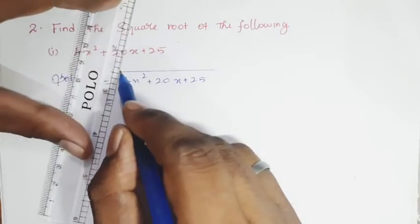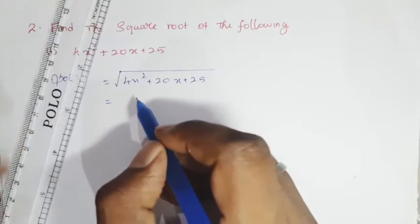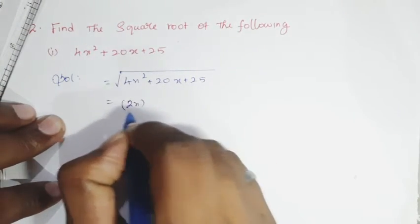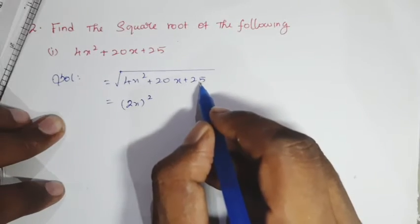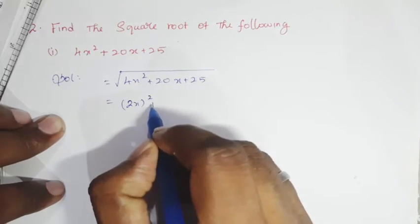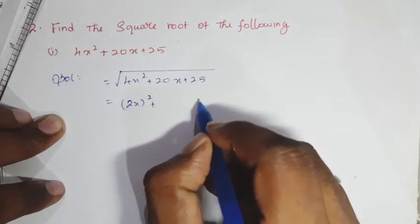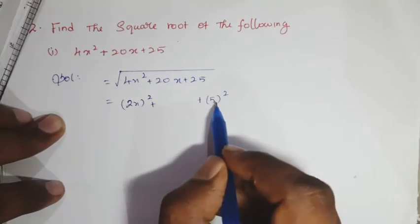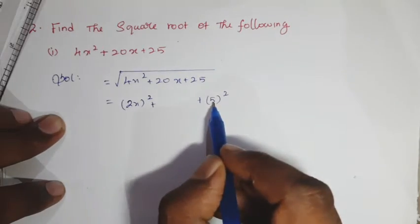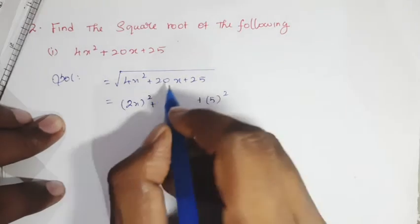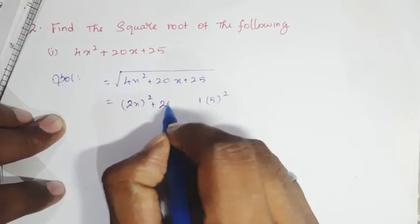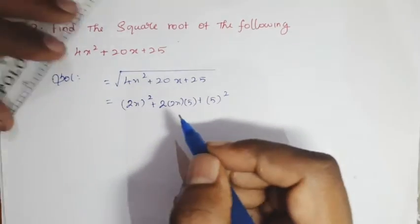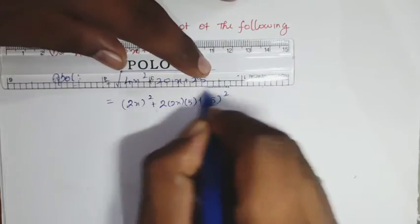Taking the square root of the first term, 4x² gives us 2x, and the square root of 25 is 5. Let's put these in squares.